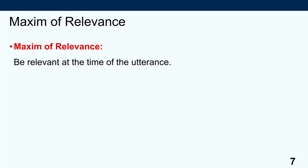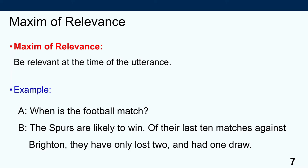The second maxim is the maxim of relevance, which very simply says: be relevant at the time of the utterance. For example, if A asks, 'When is the football match?' and B replies, 'The Spurs are likely to win — of their last 10 matches against Brighton, they have only lost two and had one draw,' that is information vaguely related to the topic, but not at all relevant to the point inquired about. The question was not about statistical inferences or the likely outcome, but simply when does the match start. So B failed to adhere to the maxim of relevance.